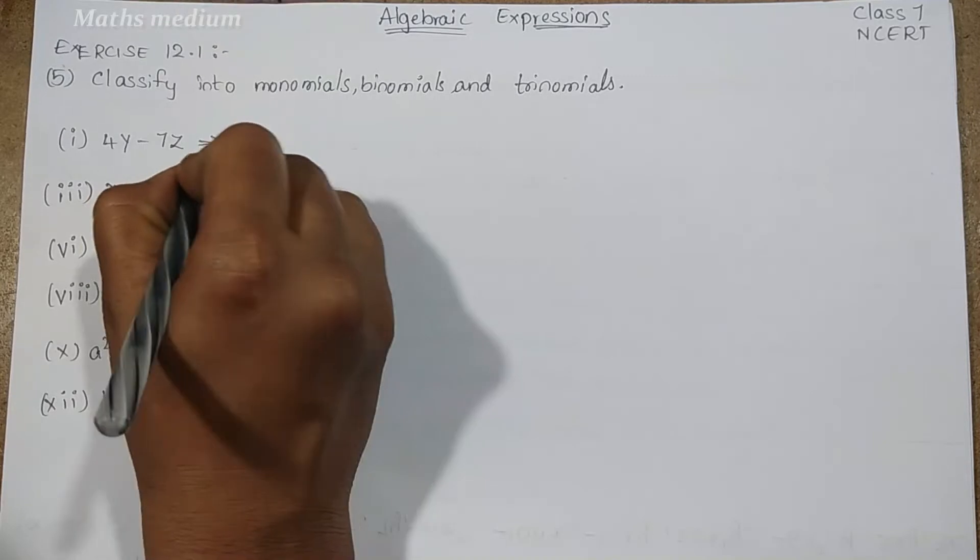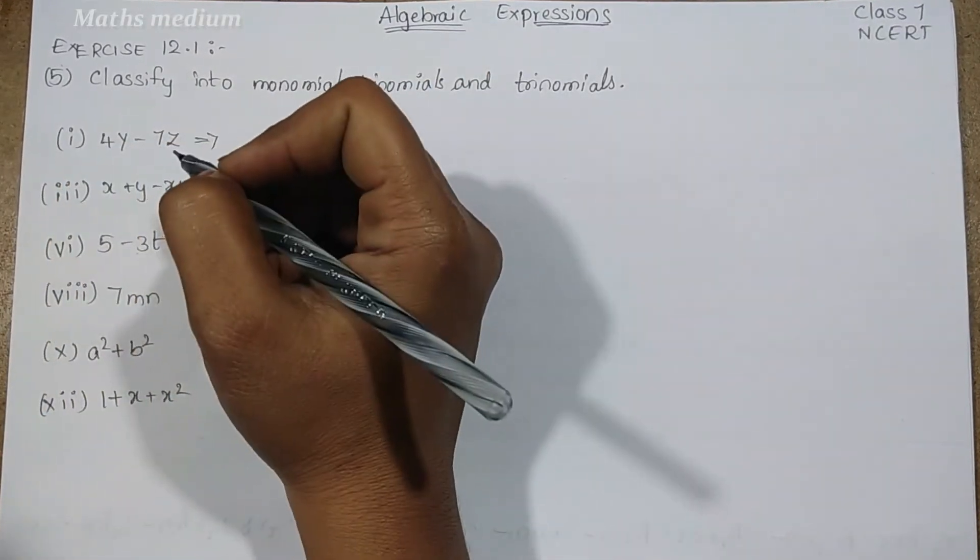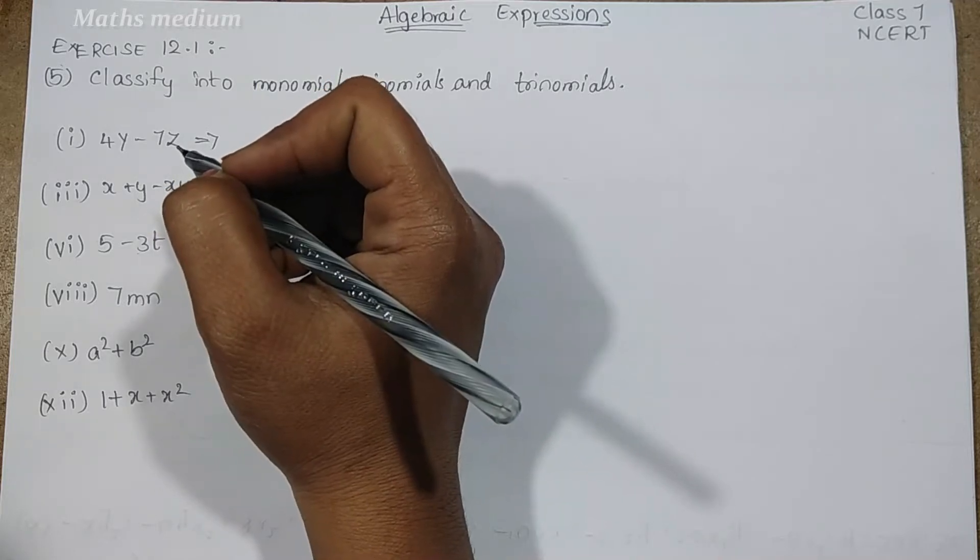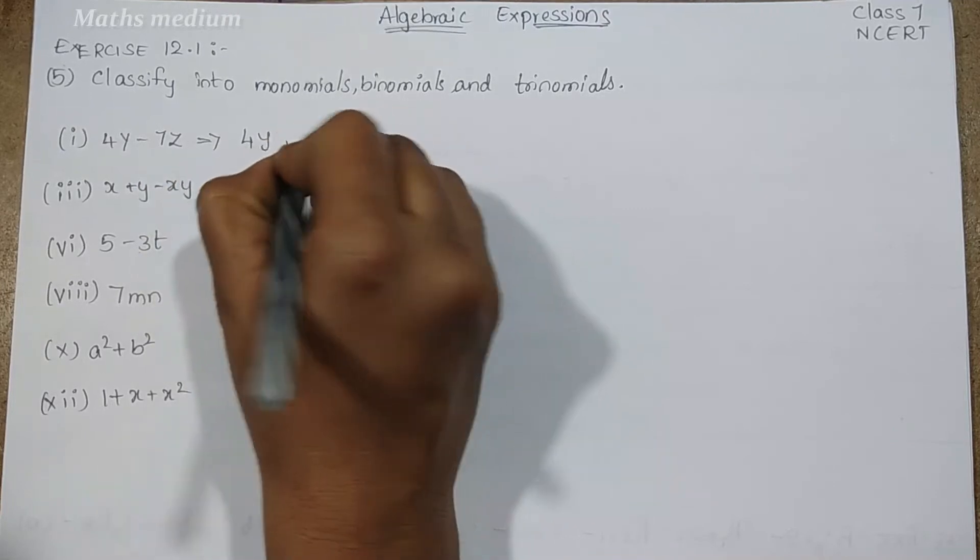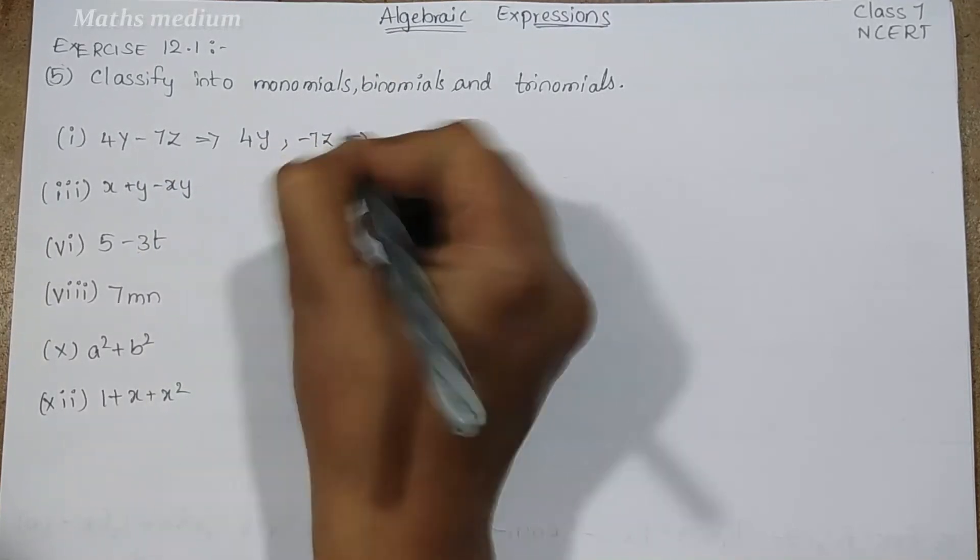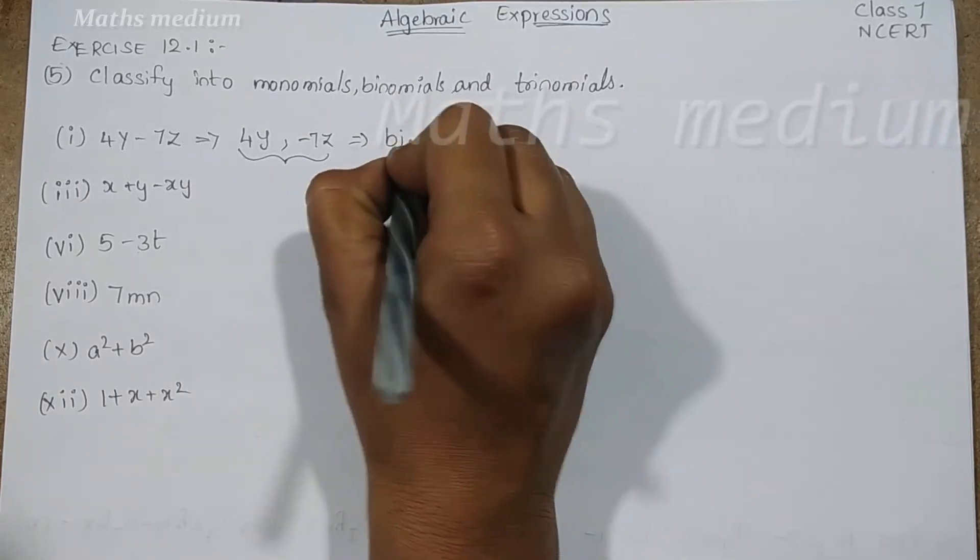Here 4y minus 7z. We have to classify either these are monomial, binomial, or trinomial. Let's start. 4y minus 7z, in this we have two terms, so it is called binomial.